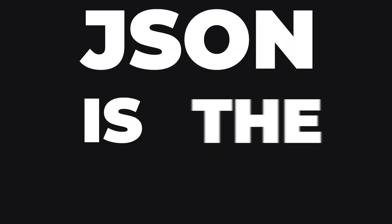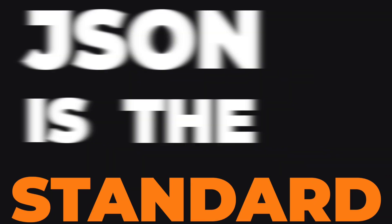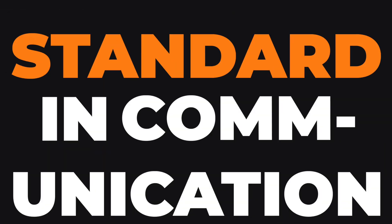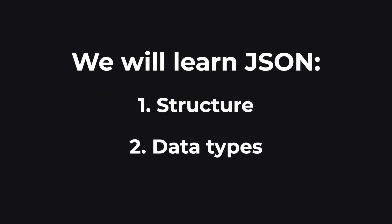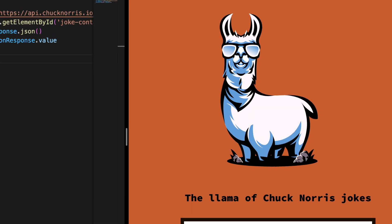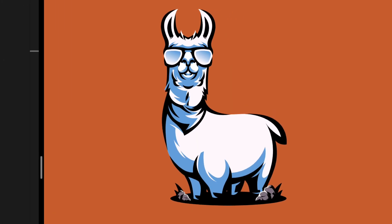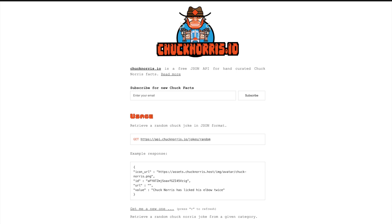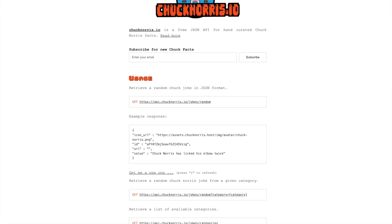JSON is the standard in communication between APIs, web applications, and mobile apps. In this video we are going to go through all the different parts of JSON, and at the end we are going to try using a website API with a website. To start, I've found an API we can play with at api.jacknorris.io.